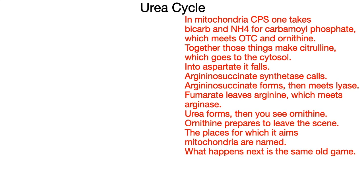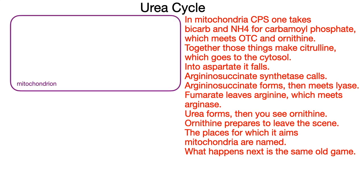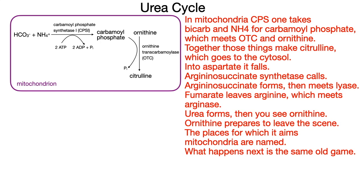In mitochondria, CPS1 takes bicarb and NH4 for carbamyl phosphate, which meets OTC and ornithine. Together those things make citrulline, which goes to the cytosol — into aspartate it falls.